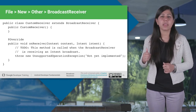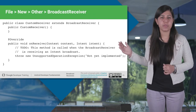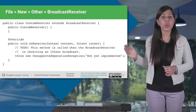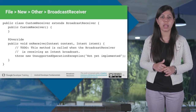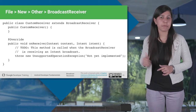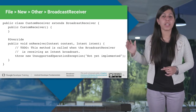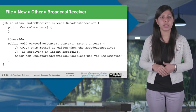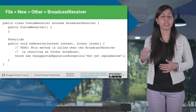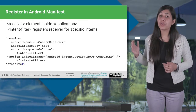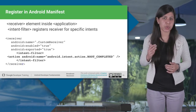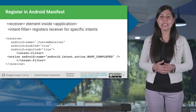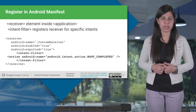This is how broadcast receivers are implemented by extending the Android BroadcastReceiver class and overriding the onReceive method. We have created a new class named customReceiver which is extending BroadcastReceiver. After creating the broadcast receiver, the next step is to register it. Let's give it a shot with AndroidManifest.